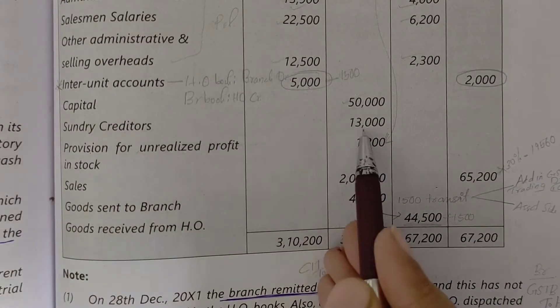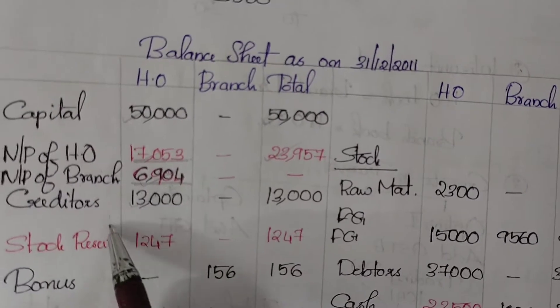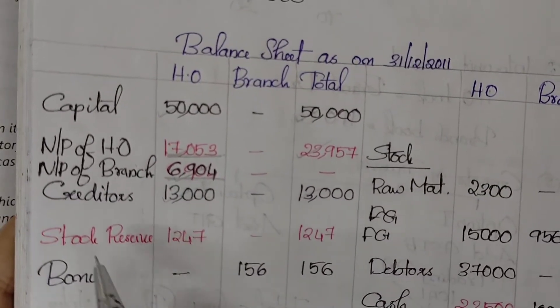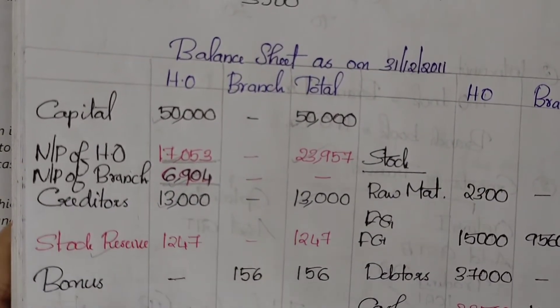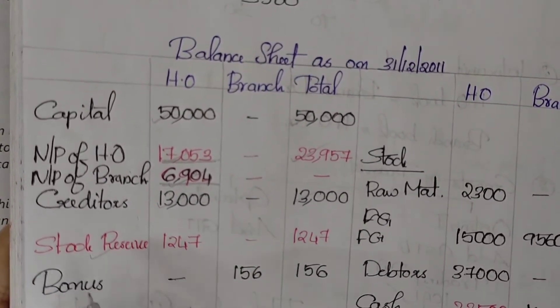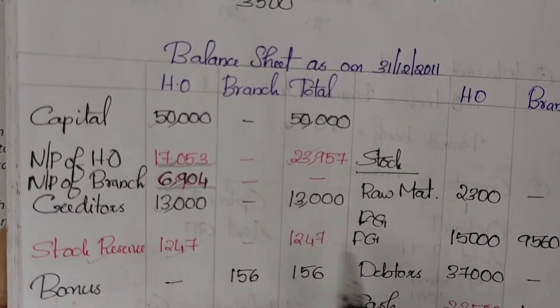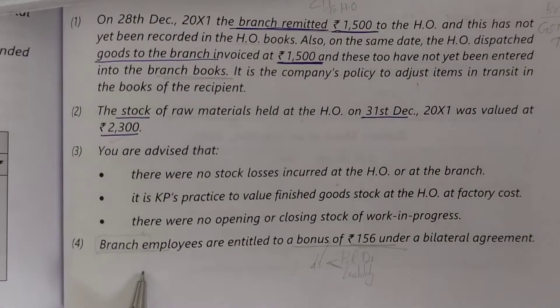On the liability side: sundry creditors 13000 for head office. Then the closing stock unrealized profit reserve is 1247. Branch employee bonus payable is 156.